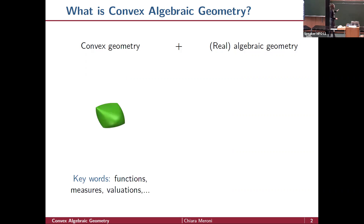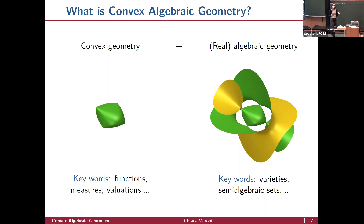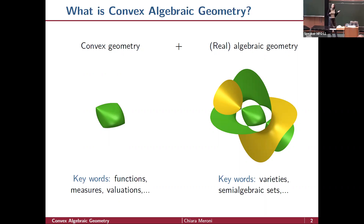By convex geometry I mean what we're discussing these days: functions on convex sets, measures, volumes, and so on. On the other side, the keywords are varieties and semi-algebraic sets. A variety, at least for today, will be the zero set of some polynomials — if we want to really simplify things, these are the objects that algebraic geometers study: their behavior, degrees, dimension, and so on.